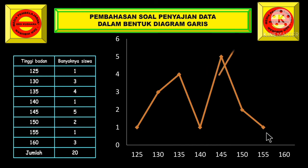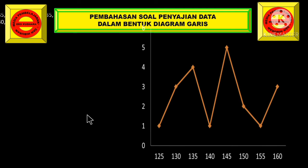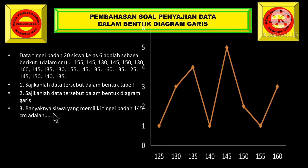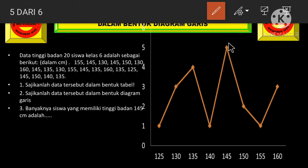Dan yang 155 turun lagi menjadi ke angka 1. Dan yang 160 mengalami kenaikan lagi ke angka 3 siswa. Inilah merupakan diagram garisnya. Kita lanjut ke soal yang ketiga. Banyaknya siswa yang memiliki tinggi badan 145 cm — grafiknya menunjukkan ke angka 5. Jadi jawabannya adalah 5 siswa.